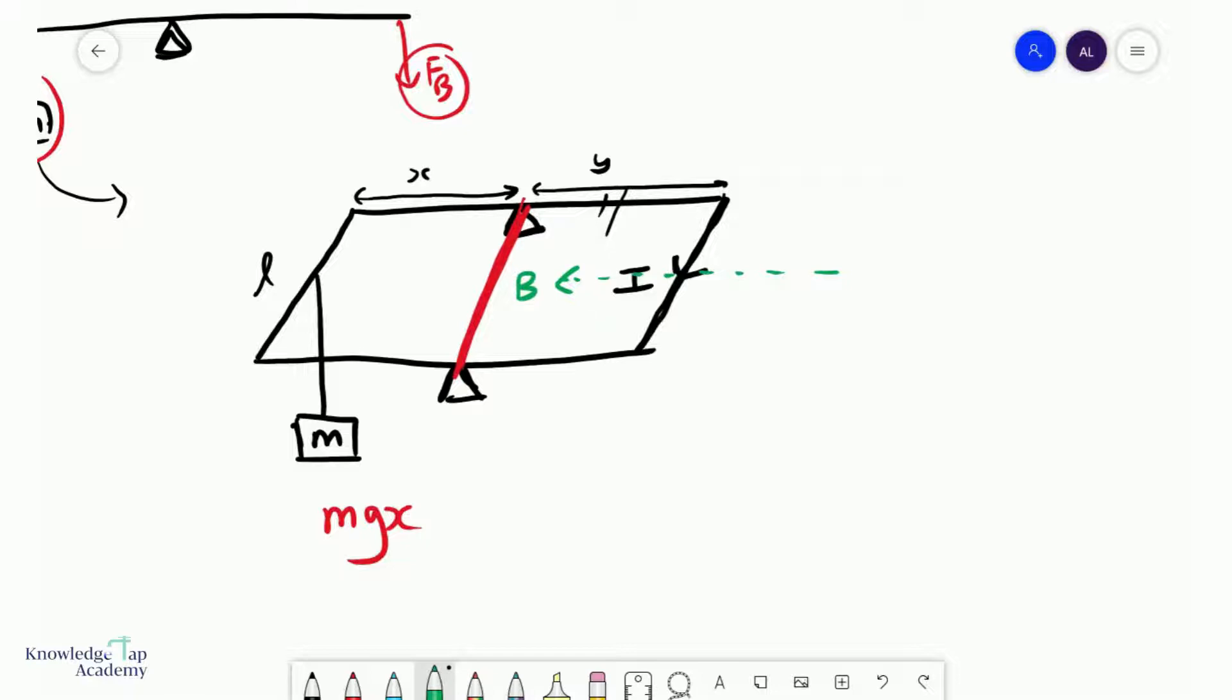with your second finger pointing to the left and your current pointing out of the screen, because of 3D drawing, will show that you will have a magnetic force Fb pointing downwards,